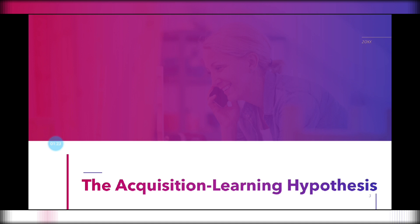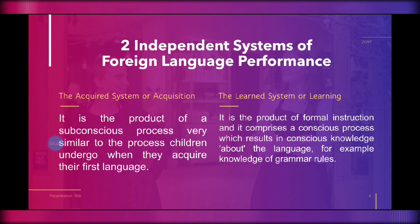First, we have the Acquisition-Learning Hypothesis. From the title itself, we can identify the two important concepts: the Acquired System, or Acquisition, and the Learned System, or Learning. According to Stephen Krashen, these are two independent systems of foreign language performance. The Acquired System is the product of a subconscious process very similar to the process children undergo when they acquire their first language. It requires meaningful interaction in the target language — natural communication where speakers are focused not on the form of their utterances but on the communicative act.